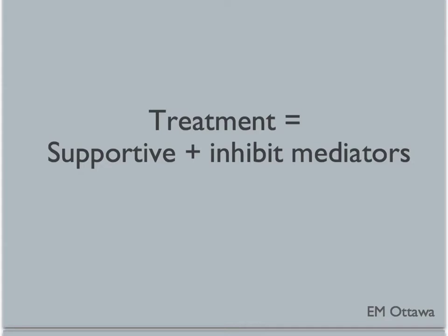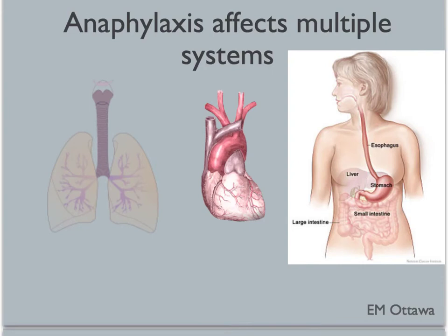The treatment of allergic reaction and anaphylaxis is directed to: one, supportive care, and two, inhibiting these chemical mediators. Let's see how these mediators can affect different parts of the body. In anaphylaxis, multiple body systems are involved — that can include the lungs, the circulatory system, the skin and the gut.